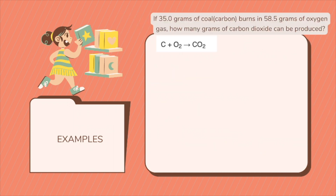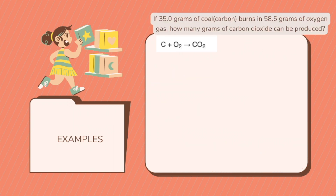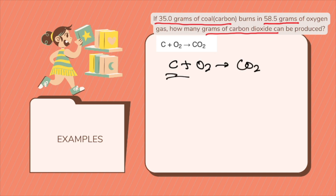Let's try another example. If 35 grams of carbon burns in 58.5 grams of oxygen, how many grams of carbon dioxide can be produced? First, determine it is a limiting reactant problem since amounts are given for both reactants. The balanced equation is: C + O2 → CO2. With 1 carbon and 2 oxygen atoms on each side, this equation is balanced.